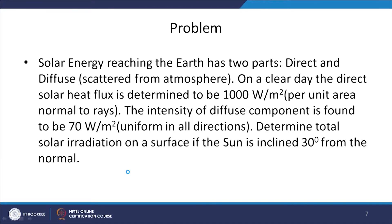Now we will do one more problem — discussing solar energy reaching the earth. We have to find out how much energy is reaching the earth. In extra-terrestrial space, we only have the direct component of radiation coming in a single direction. But at the surface of the earth, we have diffuse radiation scattered from the atmosphere, coming from all directions, which could be isotropic or non-isotropic. On a clear day, the direct solar heat flux is determined to be 1000 W/m² normal to the rays. The intensity of the diffuse component is also found to be 70 W/m² steradians, uniform in all directions.